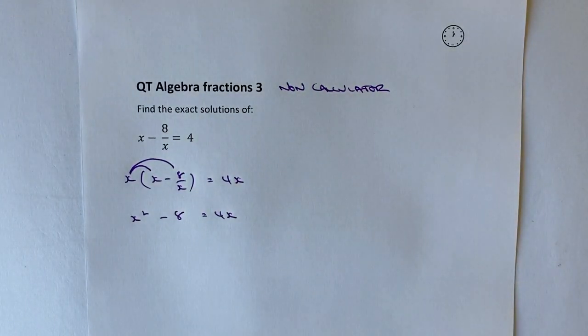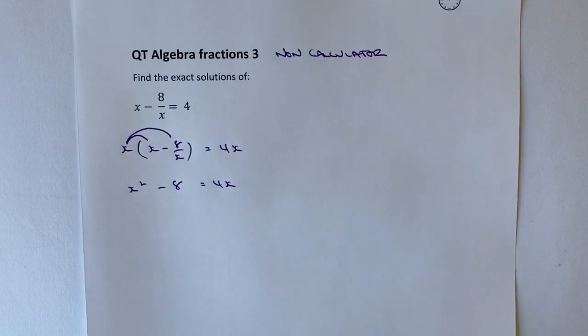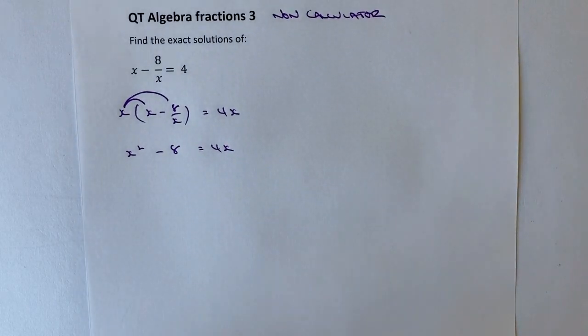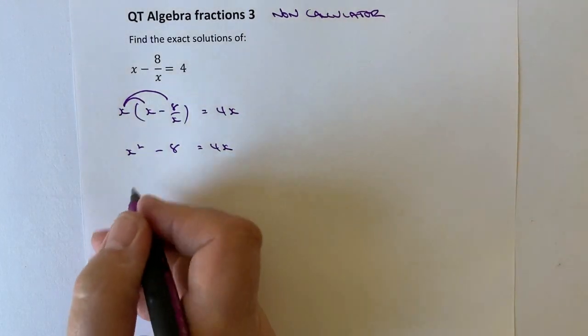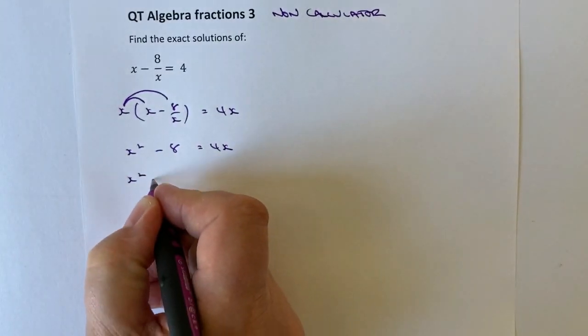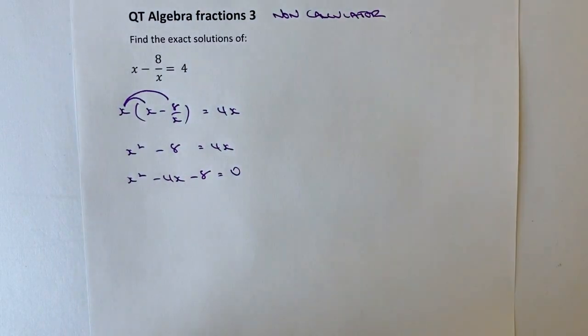So what we've got now is the formation of effectively a quadratic formula. Because if I make this now equal to 0, I should be able to solve it. So if I bring this 4x over towards the left-hand side, I've got an x squared minus 4x minus 8 equals 0.